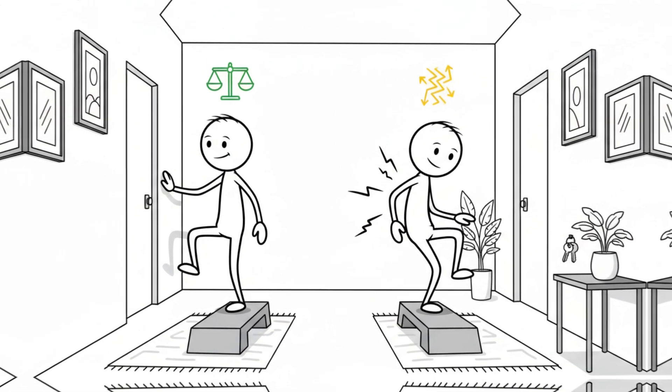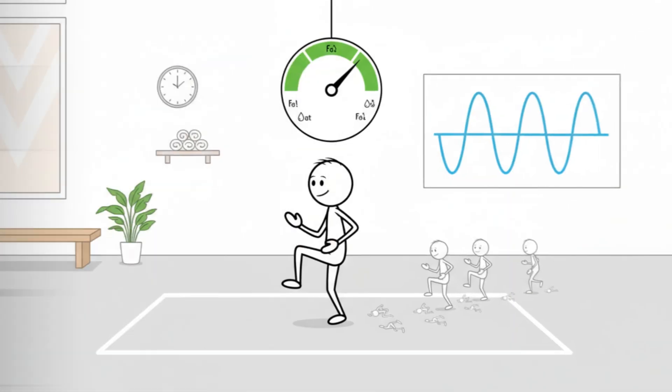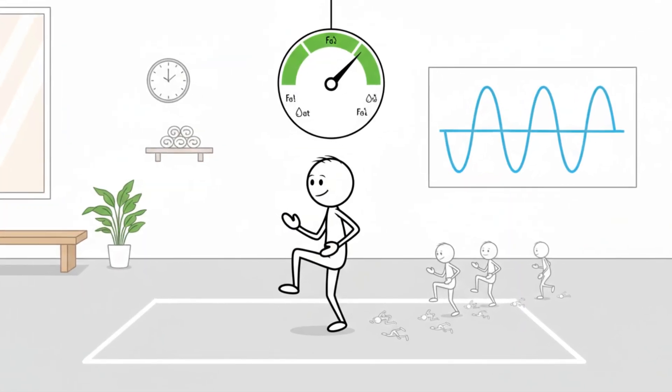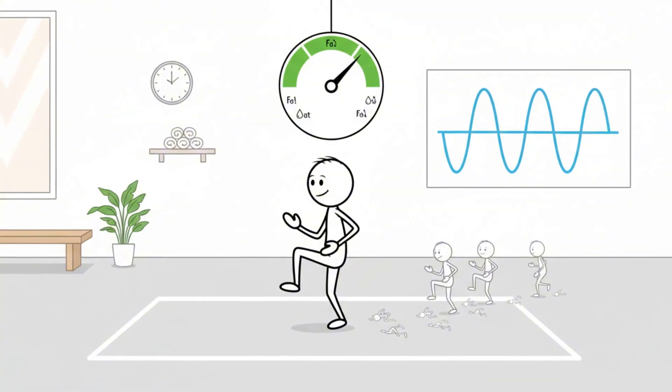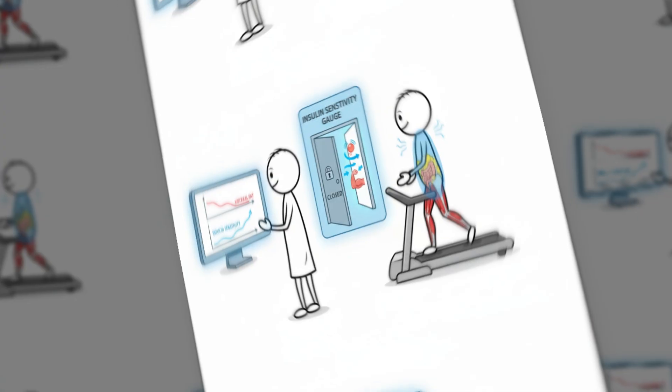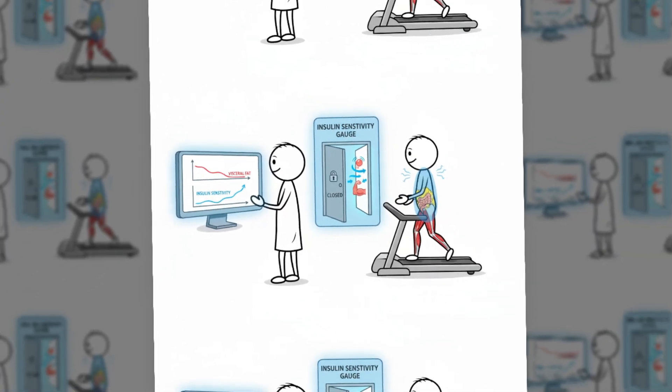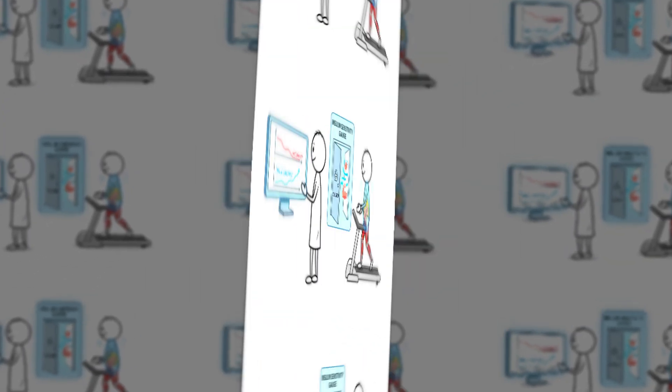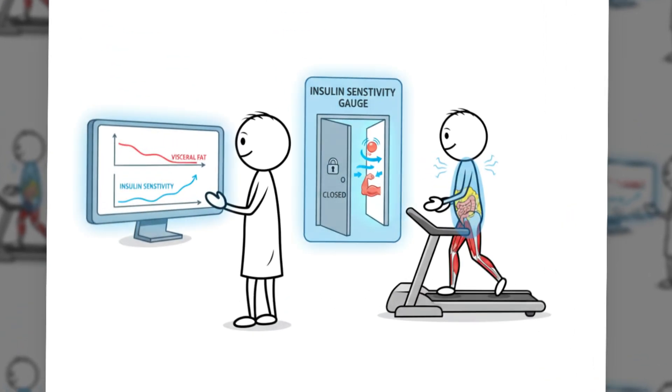One more point backed by research. Improving insulin sensitivity is especially beneficial for individuals carrying excess visceral fat. Zone 2 training does this remarkably well. Even short, regular sessions can produce meaningful changes, making it a sustainable, science-supported path for long-term health.